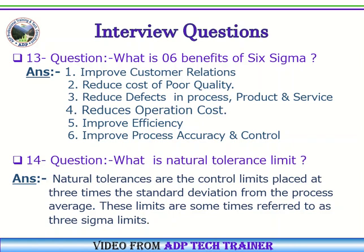Question Number 14: What is natural tolerance limit? Answer: Natural tolerances are the control limits placed at three times the standard deviation from the process average. These limits are sometimes referred to as Three Sigma limits.